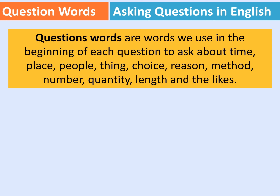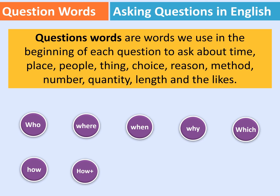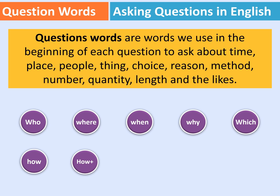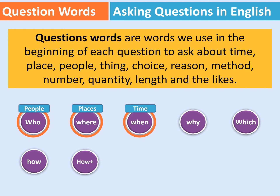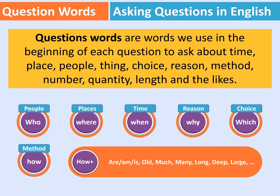أدوات الاستفهام في اللغة الإنجليزية هي كالتالي: who, where, when, why, which, how وأدوات أخرى مشتقة من كلمة how. نستعمل who حينما نسأل عن الأشخاص، where حينما نسأل عن المكان، when حينما نسأل عن الزمن، why حينما نسأل عن السبب، which حينما نسأل عن الاختيار، وhow حينما نسأل عن الكيفية. ترجمتها: who=من، where=أين، when=متى، why=لماذا، which=أي، how=كيف.